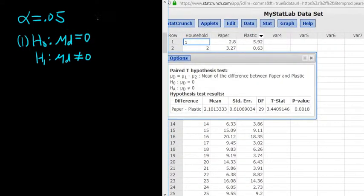And then we have our test statistic and our p-value. So let's see. Our test statistic, that's step two, is equal to 3.4409. That's good. And the p-value is equal to 0.0018.